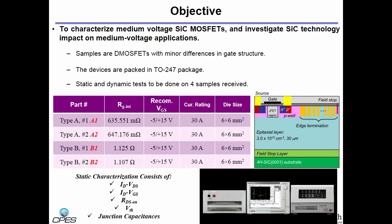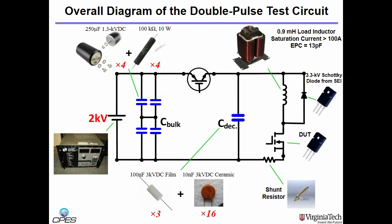For the dynamic or double pulse test, we have a circuit with a 2kV bus for the 3.3 kV devices. Due to long cables from the power supply to the double pulse tester, we support the 2kV bus with four bulk capacitors, 250 microfarad, 1.3 kV each, in close proximity of the tester.